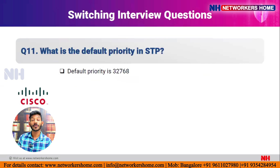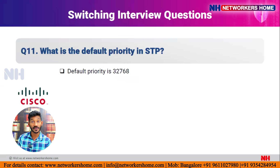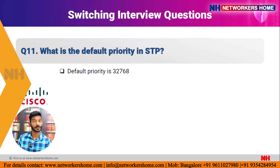Question eleven: what is the default priority in STP? The default priority is 32768. However, when you run 'show spanning-tree' on a switch, you typically see 32769 because the VLAN number is added. By default, switches are in VLAN 1, so 32768 + 1 = 32769. If configured for VLAN 10, you would see 32778.